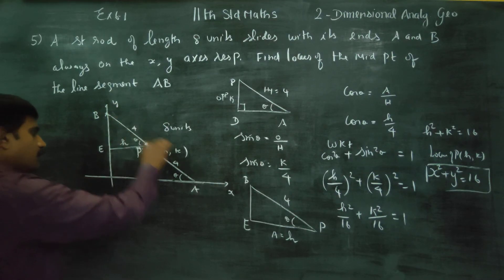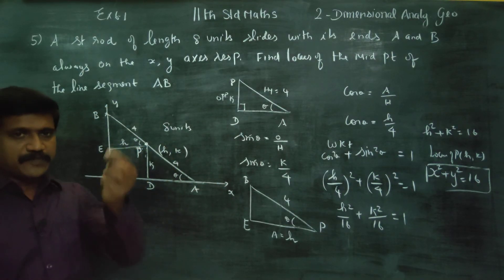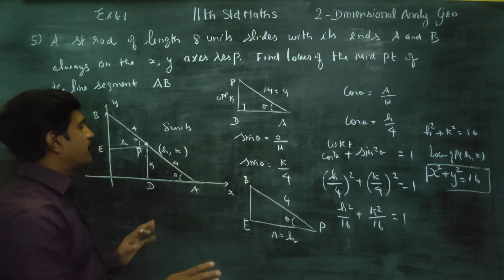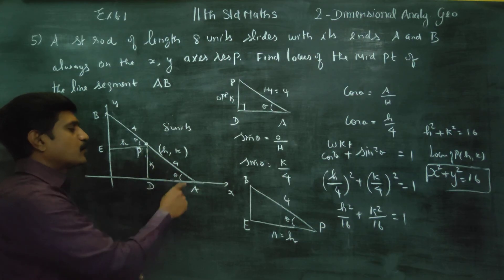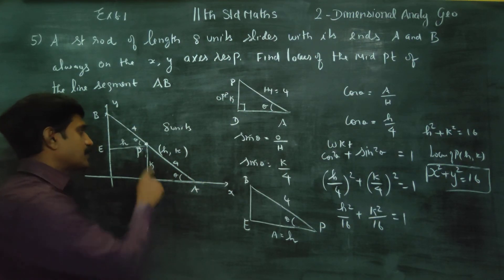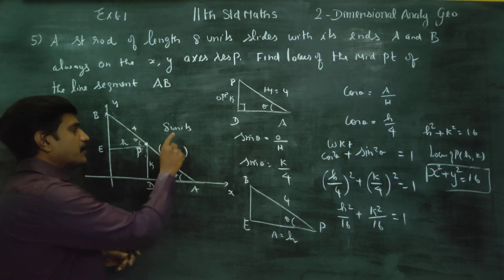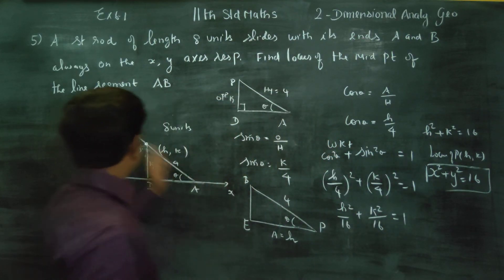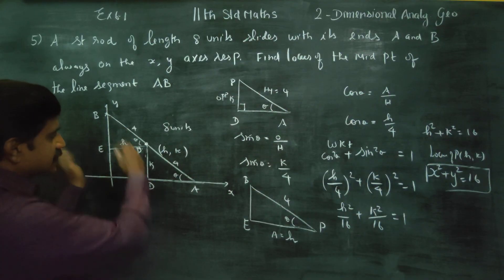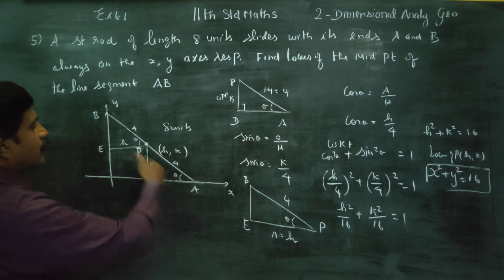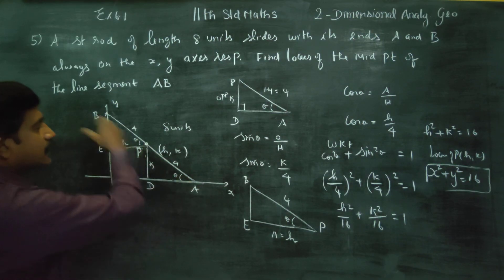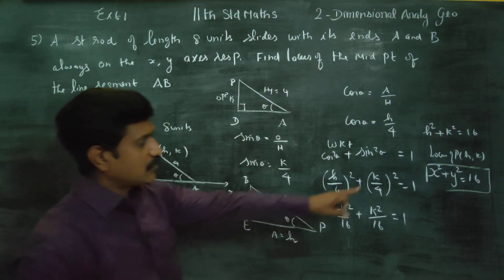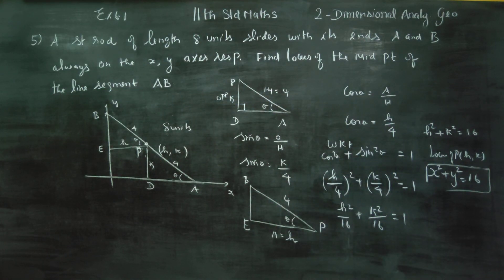Think of it this way: you have a long rod, and you fit an LED bulb at its midpoint. When you slide the rod with its ends along the floor and wall — like a ladder — the midpoint traces a path. That path is a circle: X² + Y² = 16. So if the rod slides along two axes, the midpoint undergoes rotational motion, and the path traced by point P is the circle X² + Y² = 16.